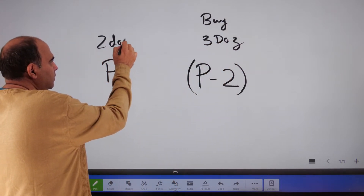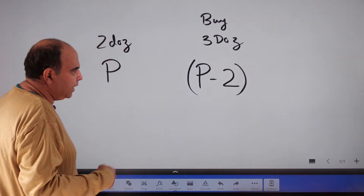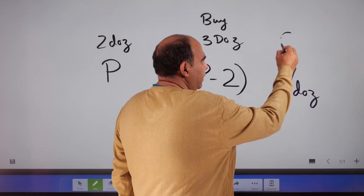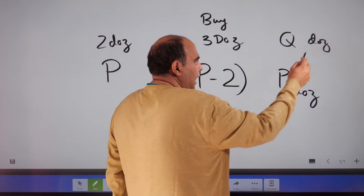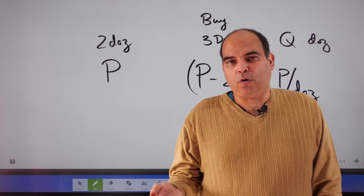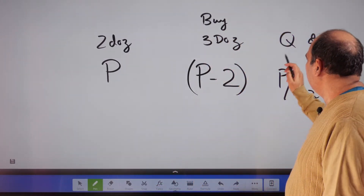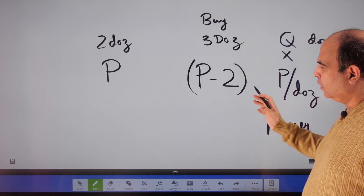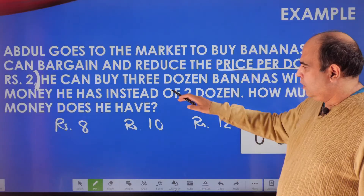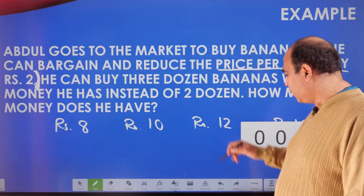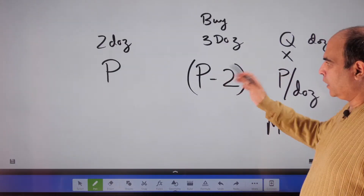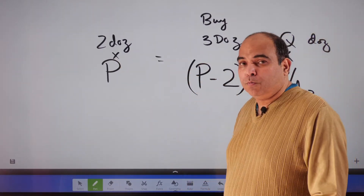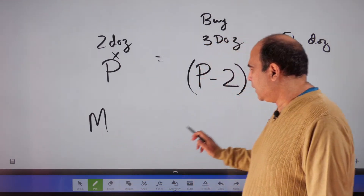One variable is the price per dozen; the second is the quantity in dozens. The obvious relationship between price and quantity is: price times quantity equals the money spent. Since the question says 'with the money he has' he can buy three dozen instead of two dozen, the money is equal in both cases. So all you have to do is: p × 2 = 3 × (p − 2). Equate the two because the money is equal in both scenarios.